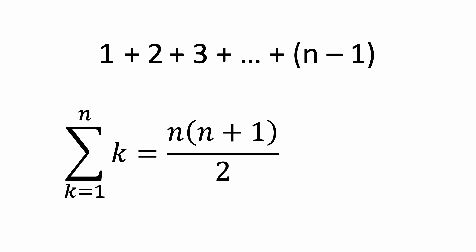So to count the total number of steps, we have to add 1, plus 2, plus 3, and so forth, all the way up to n-1. We can use this formula here that tells us that the sum from 1 to n is n times n plus 1 over 2, or n squared plus n over 2.